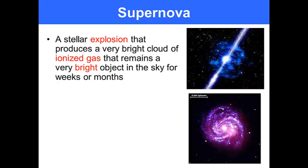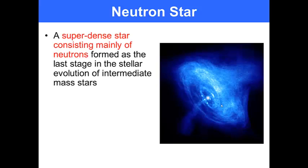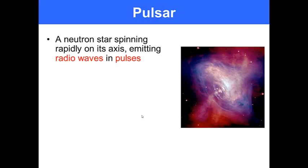A supernova is a stellar explosion that produces a very bright cloud of ionized gas that remains a very bright object in the sky for weeks or months. It can radiate as much energy as the sun can during its entire lifespan. It results from the gravitational force within the star compacting at the core. A neutron star is a superdense star consisting mainly of neutrons, formed as the last stage of stellar evolution of intermediate mass stars. It spins rapidly emitting radio waves. A single spoonful of a neutron star would weigh approximately 907,000 tons.